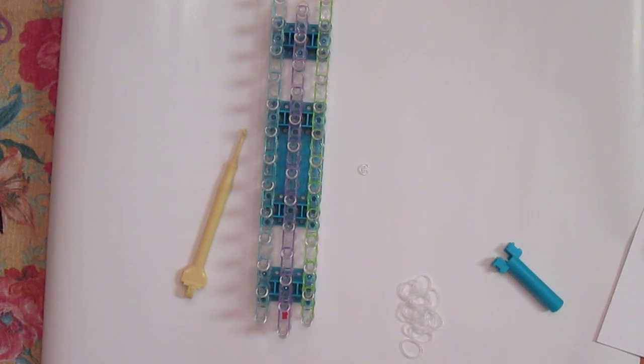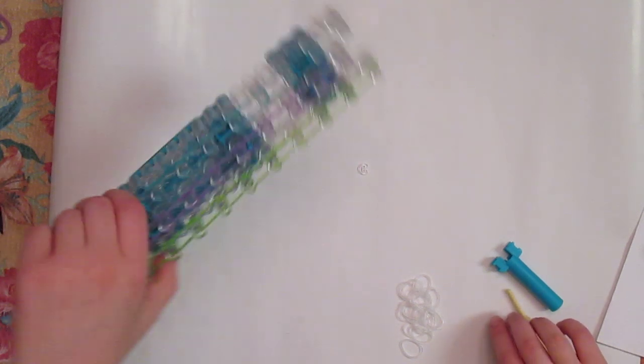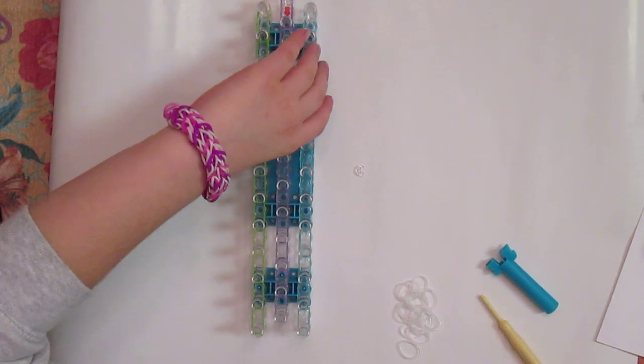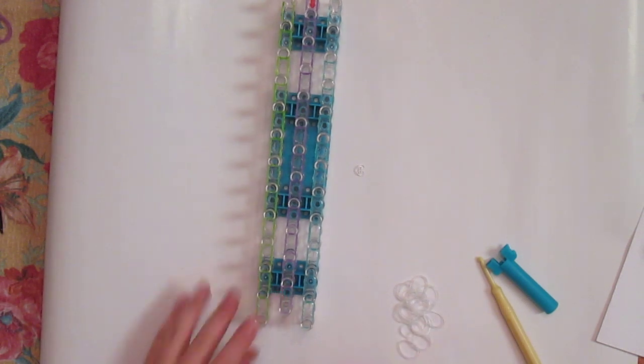Now to get on with the clear or the inside color. So now you want to flip your loom over and take your inside color which mine is clear.